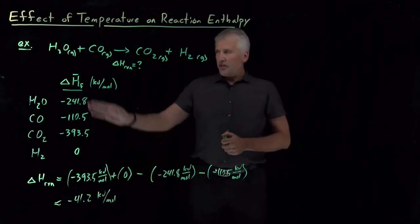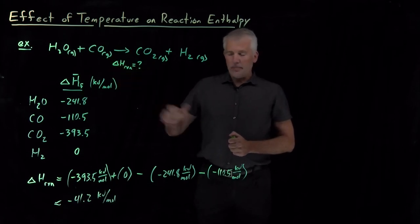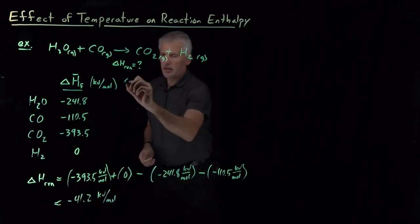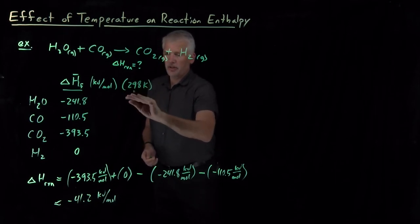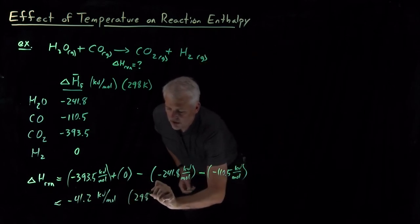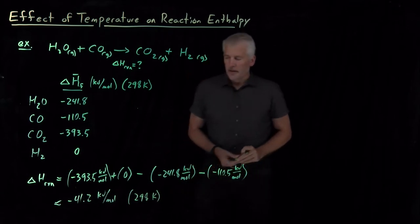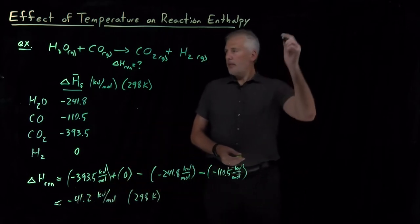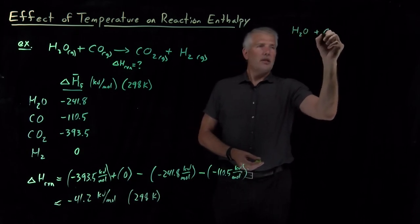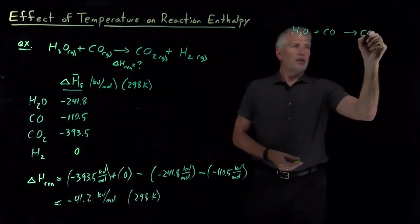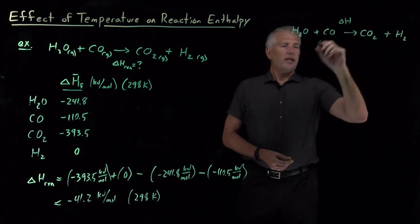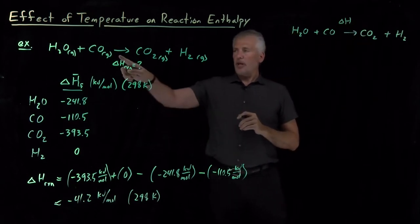As mentioned, this chemical reaction is important industrially, but not at 298 Kelvin. The numbers we looked up are all correct at 298 Kelvin, so this result — negative 41.2 kJ/mol — would be the enthalpy of the reaction if we were to perform it at 298 Kelvin.